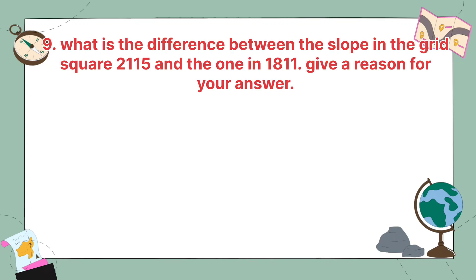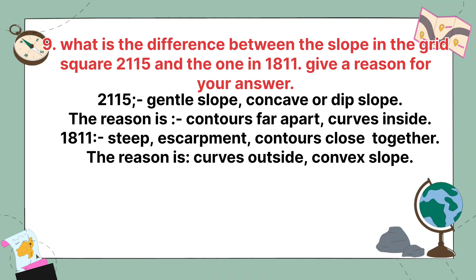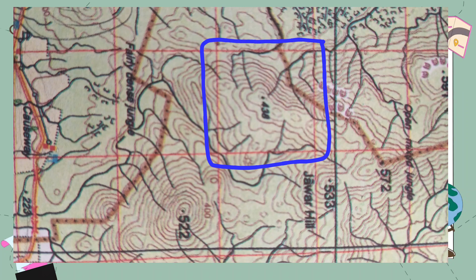What is the difference between the slope in grid square 2115 and the one in 1811? Give a reason for your answer. In grid square 2115, it is a gentle slope — the reason is contours are far apart and curves face inside. In grid square 1811, it is a steep slope because contours are close together, or a convex slope occurs outside.